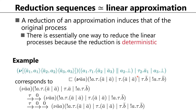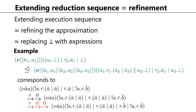A reduction of an approximation induces that of the original process. There is essentially one way to reduce the linear process because the reduction is deterministic — there is no non-determinism caused by race conditions, since the binding already tells us which name communicates with which. So this linear process corresponds to a unique reduction sequence.